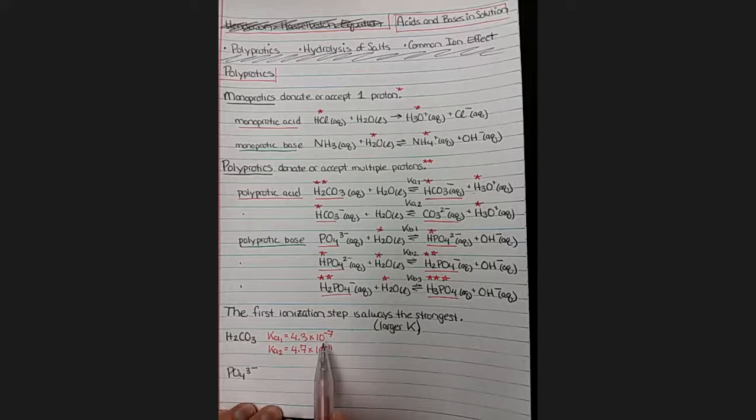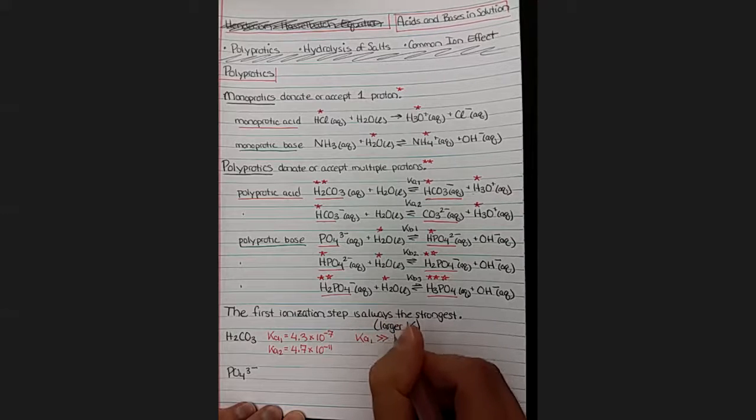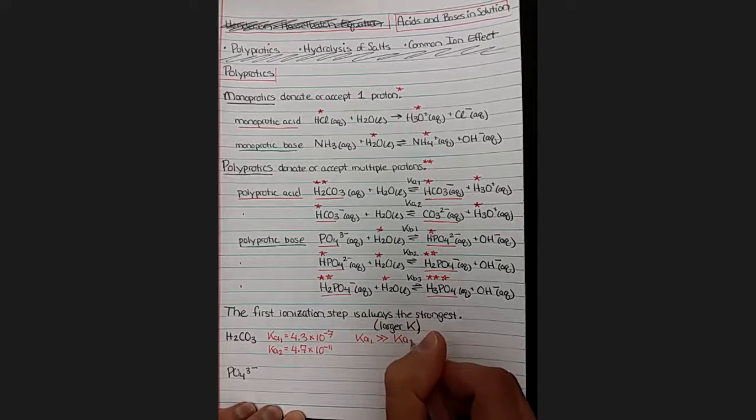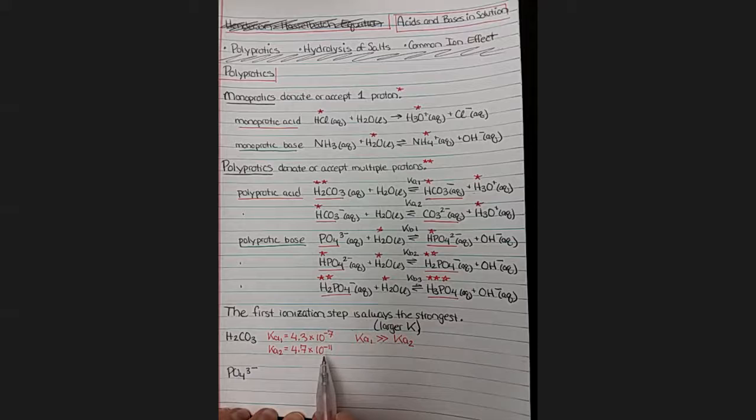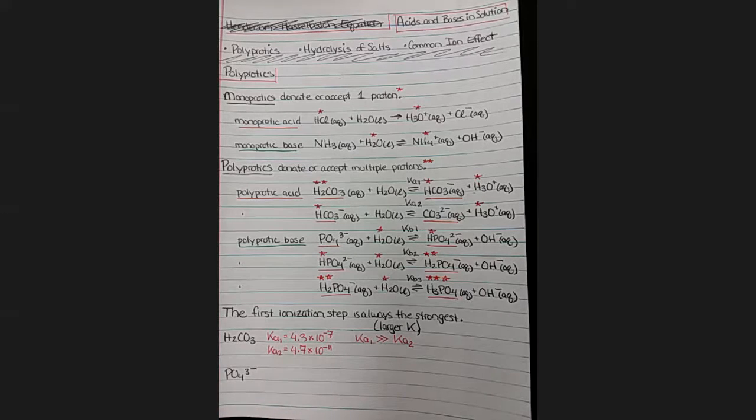And if we compare those two numbers, we know that negative 7 is closer to zero than negative 11. So that KA1 is going to be much larger than our KA2. There are four orders of magnitude difference between this one. So the first one happens 10,000 times more than the second one. So it's much greater than the other.